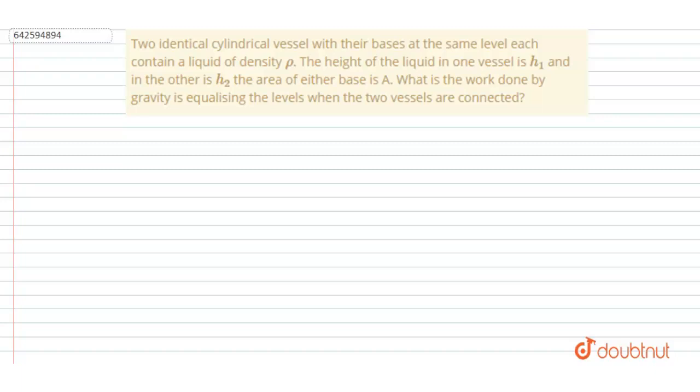...with their bases at the same level, each contain a liquid of density ρ. The height of the liquid in one vessel is h₁ and in the other is h₂. The area of either base is A. What is the work done by gravity in equalizing the levels when the two vessels are connected? So let's suppose this is...